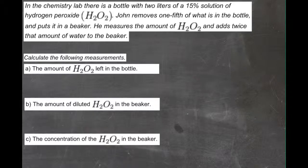If he started with two liters of the entire solution and he took out one-fifth of what was there, then he took out one-fifth of a liter per liter, so one-fifth times two, or a total of two-fifths of a liter that he removed.